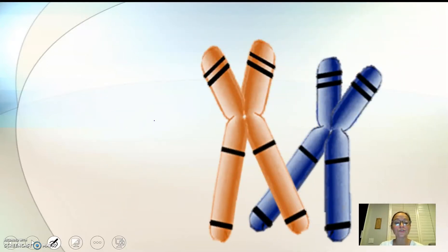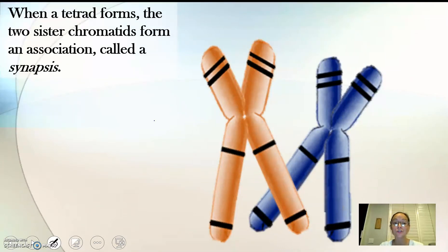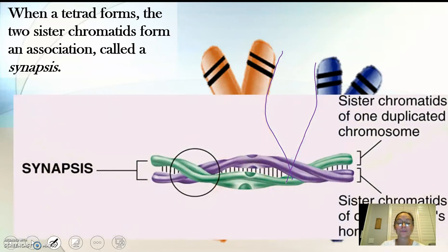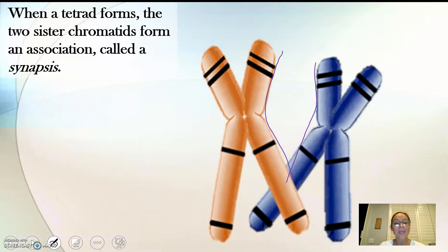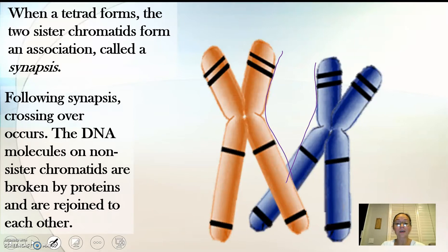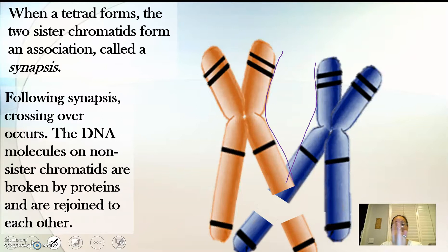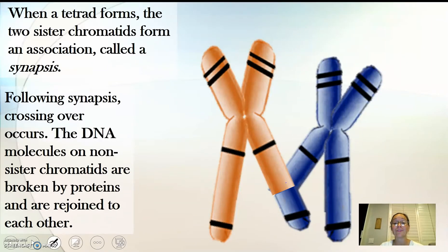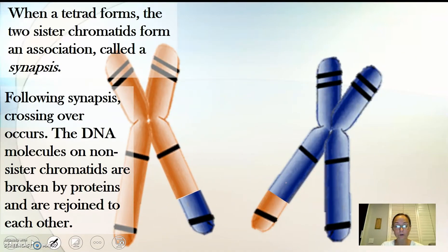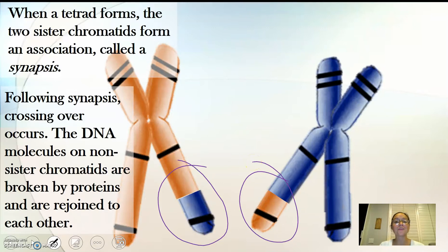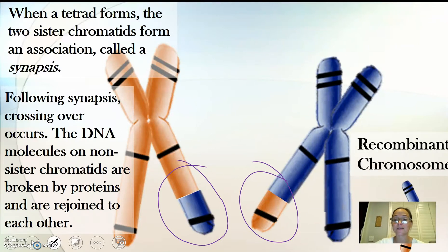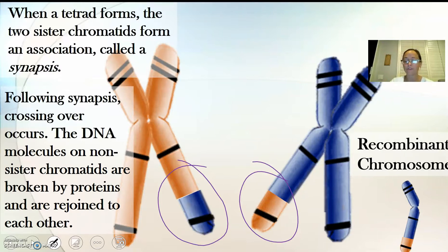A cool thing that happens here is something called crossing over. When a tetrad forms, the two sister chromatids form an association called a synapsis — these two sections would be zippered together and really close. What happens when they're together is crossing over: the chromosomes actually break apart, broken by proteins, and pieces are switched. They actually exchange pieces of their DNA. So this orange one now has a piece of DNA from the blue chromosome, and vice versa. This creates variation — it's one source of genetic variation, a genetic shuffling that occurs in meiosis. We call this a recombinant chromosome, because it has DNA from two different chromosomes.